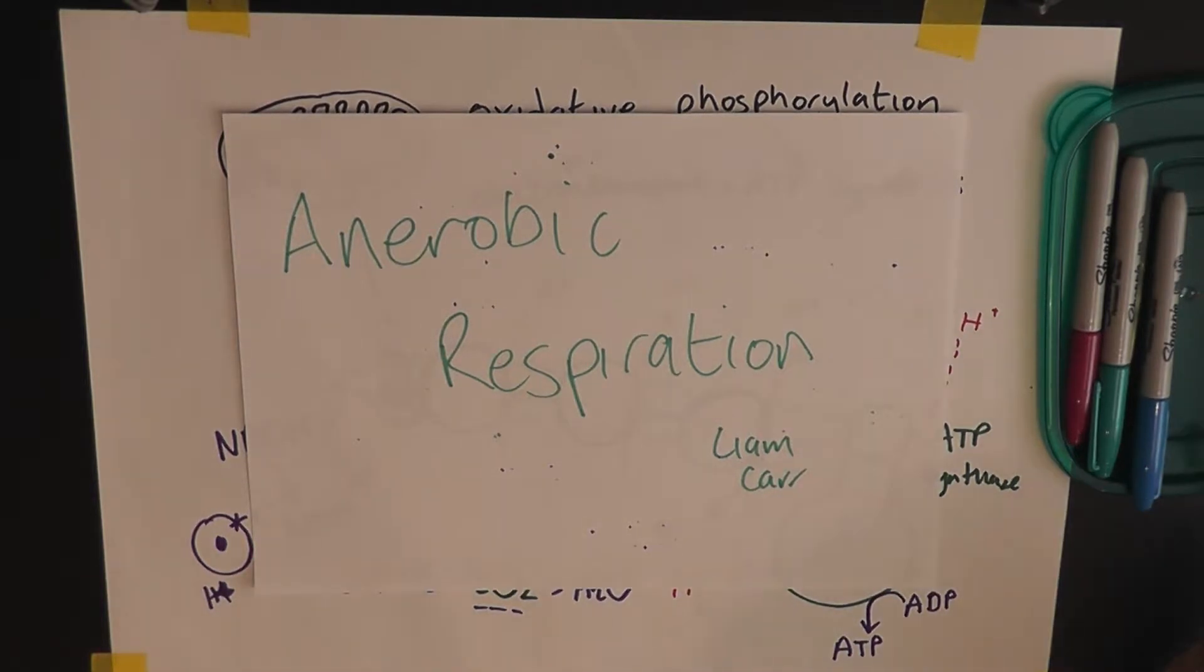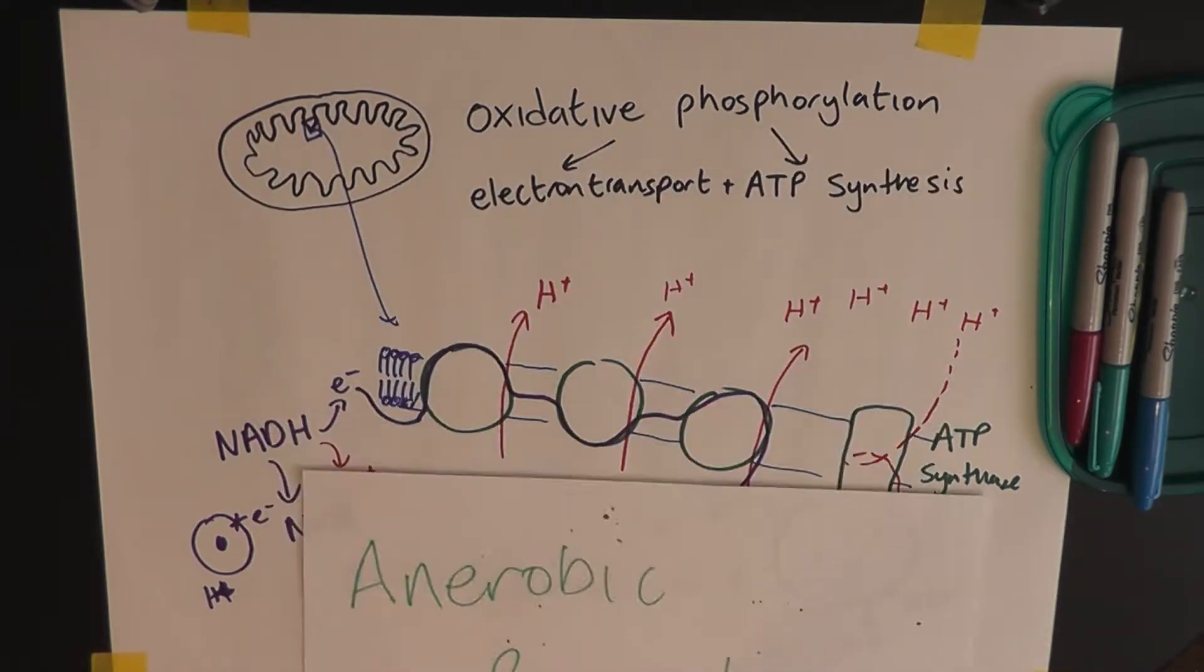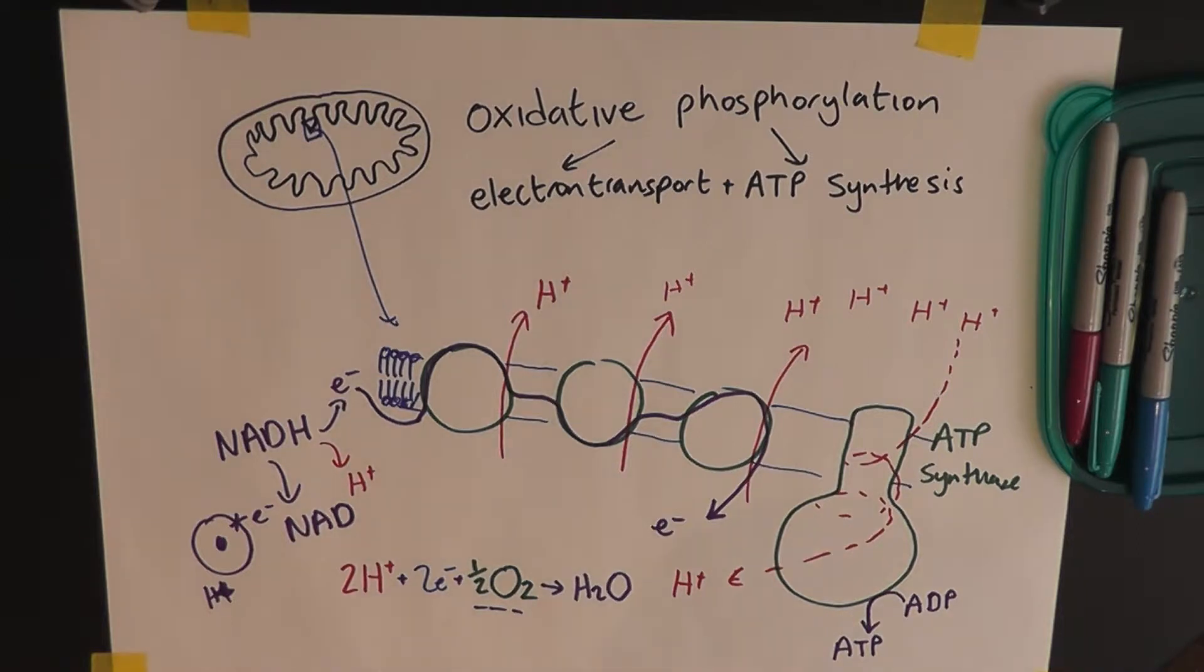So, today I'm going to answer the question, what happens when we don't have any oxygen? Well, this is the electron transport chain in ATP synthesis, or oxidative phosphorylation, as it's known.